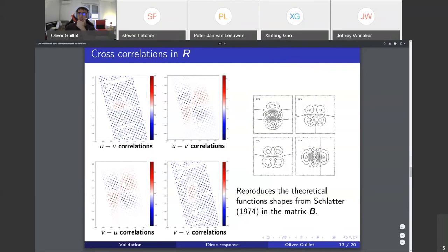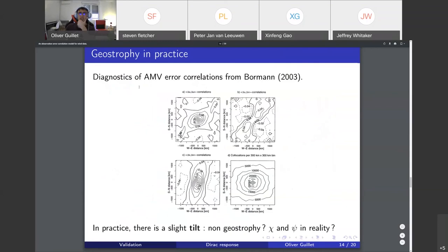One of the most interesting results: these are the diagnostics from the AMV error correlations from Bormann 2003. If you compare to before, you see there is a slight tilt in the figures, so it's not exactly symmetric around the x-axis or the y-axis. The slight tilt might be due to non-geostrophy in the wind.